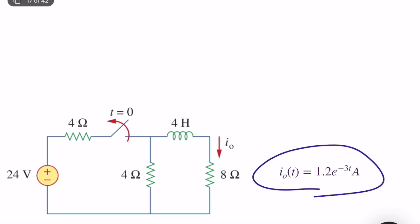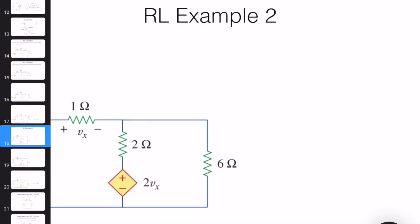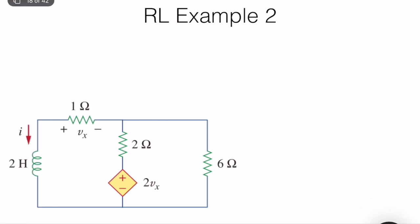Analyzing a first-order circuit carefully is not that hard. You need to be careful about steady-state conditions, what happens at the switch, how to compute the time constant, and other important details. Now a slightly harder example: an RL circuit with an inductor and a dependent source. One approach is to write the inductor's differential equation L·di/dt to find the time constant. Another approach is to find the equivalent resistance at the inductor terminals, then τ = L/R_eq.